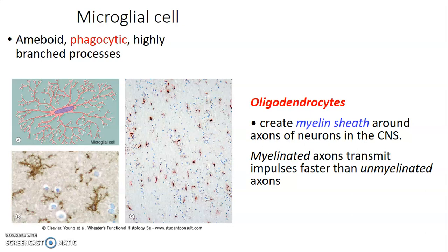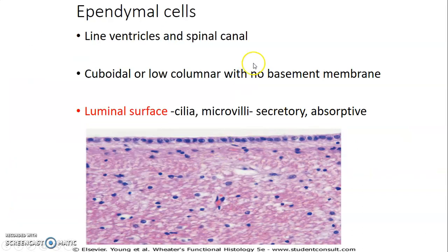Ependymal cells line the ventricles of the brain and the central canal of the spinal cord. They are cuboidal or low columnar cells that lack a basement membrane. On their luminal surface they have cilia and microvilli, mainly for secretory and absorptive purposes.